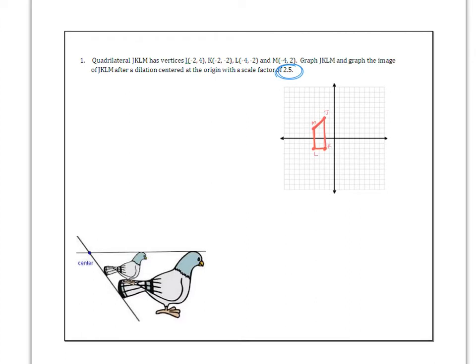Great. Hopefully your original image or your pre-image looks like mine. I have JKLM plotted, labeled, and I connected the points. Now we are supposed to send this through a dilation centered at the origin with a scale factor of 2.5. So we take all of our coordinates and multiply by 2.5.